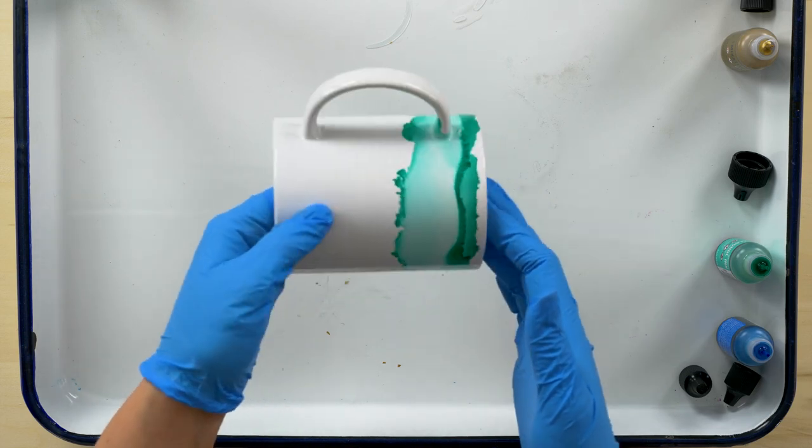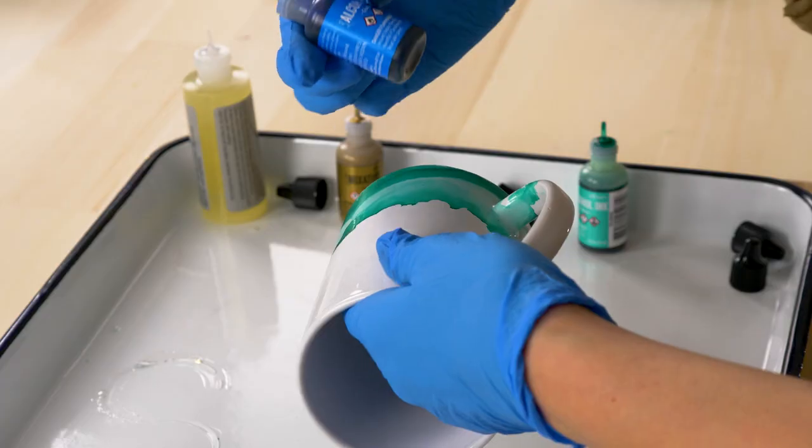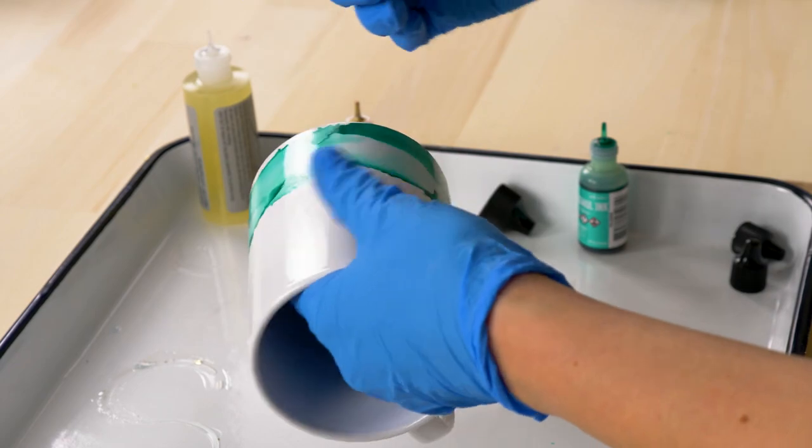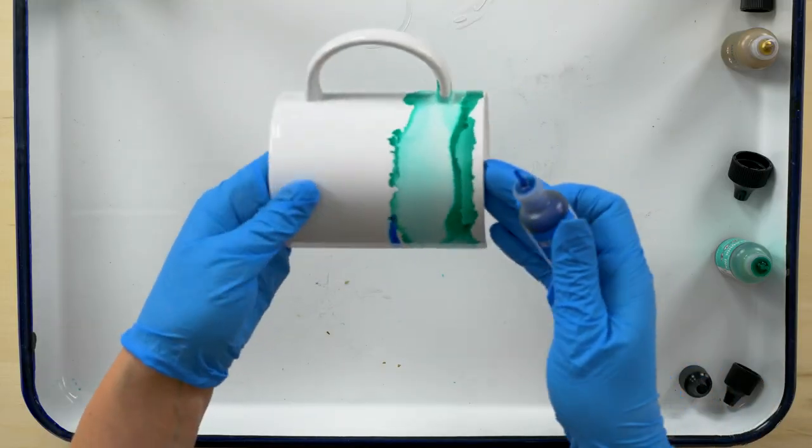Let's add another color now that our first color is dry. You can add a little bit of this glacier blue. Keep the mug spinning and add your color.